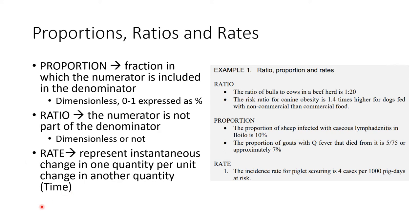A rate represents an instantaneous change in one quantity per unit change in another quantity, which is usually time. With regards to measures of health, we usually associate it to instantaneous change in the health status of animals with respect to time. For example, the incidence rate of piglet scours is 4 cases per 1,000 pig-days at risk — meaning every 1,000 pig-days at risk, there will be 4 cases of piglet scouring.